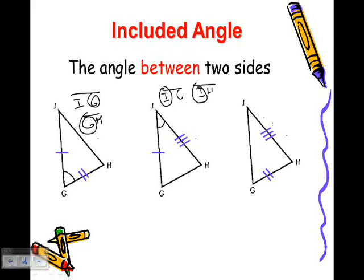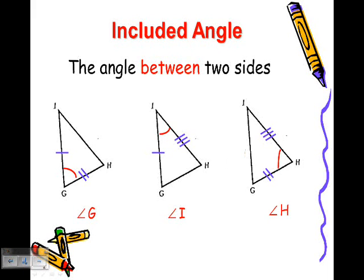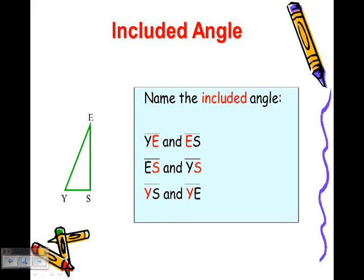Finally, here I have triangle IGH where I know IH has a congruency and GH has a congruency, so the angle between them is angle H. Let's name the included angle. If you have YE and ES, the angle between those two sides is angle E. ES and YS, the included angle would be S. And YS and YE, those segments, the included angle would be Y.